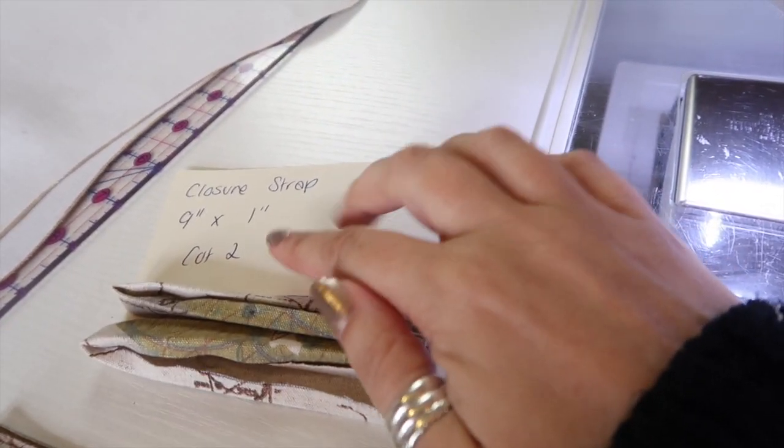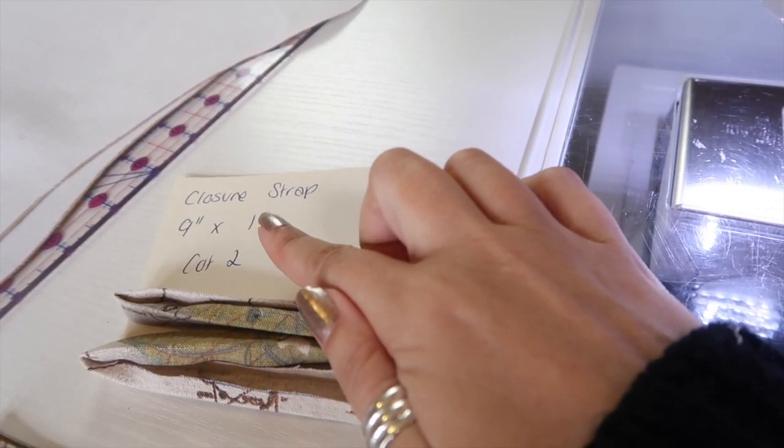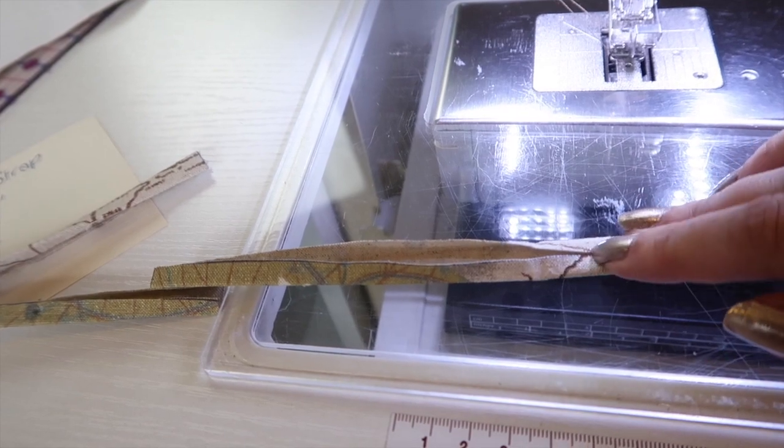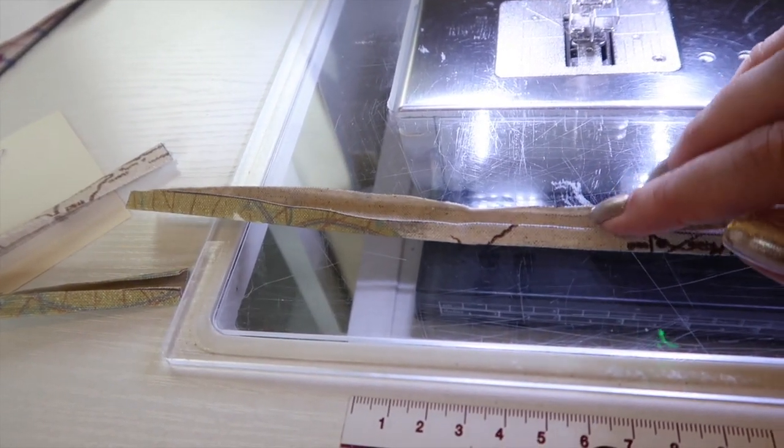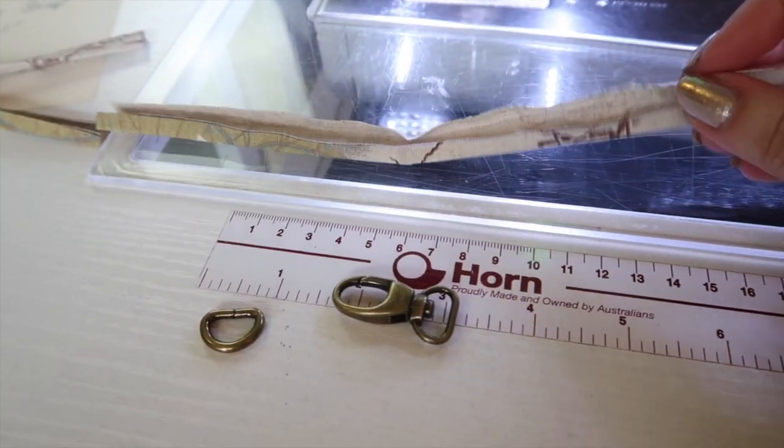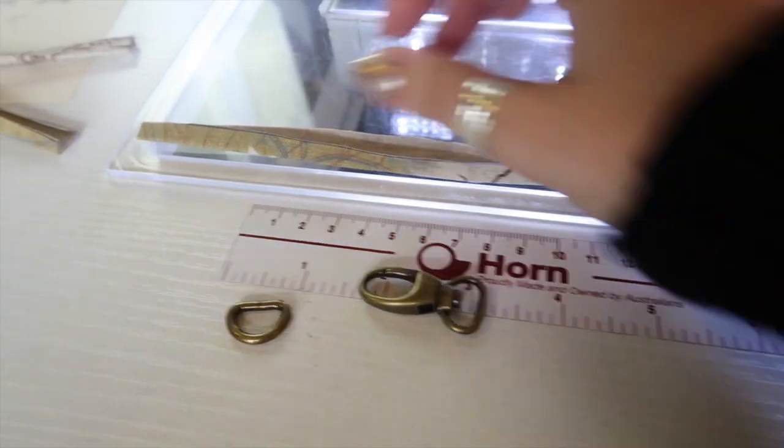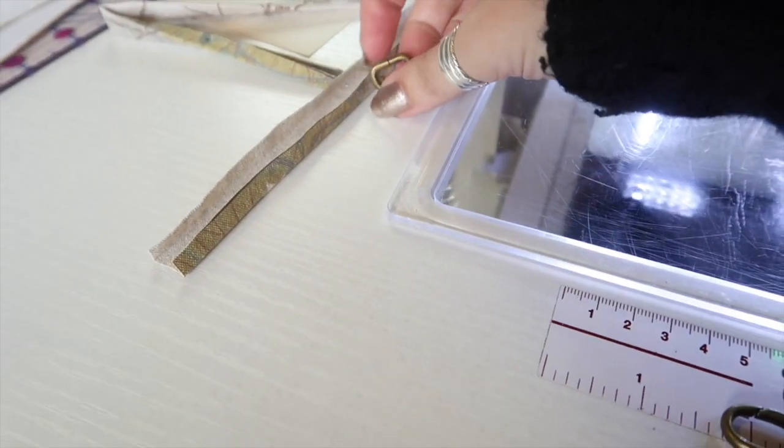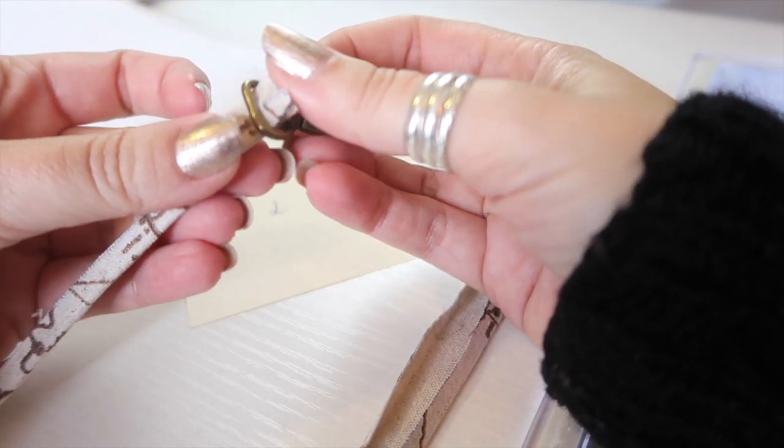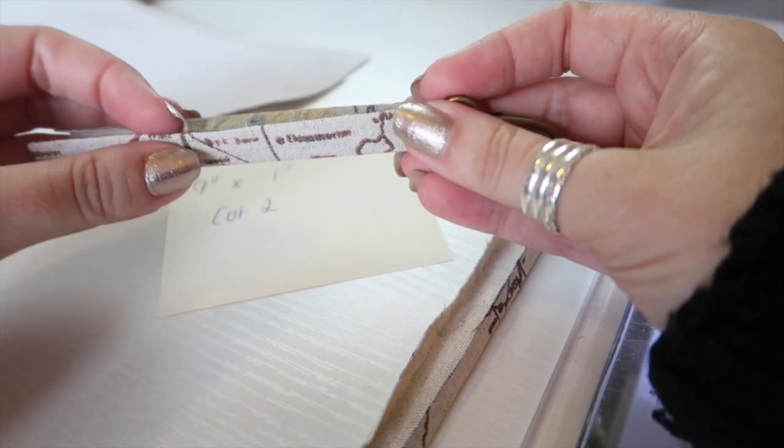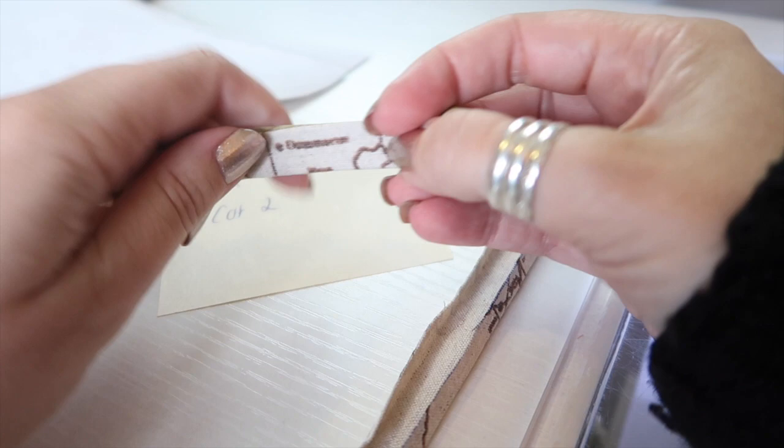Okay, so the straps are done. Now I'm going to move on to the closure strap. So you want your two pieces that are nine inches by one inch, and what you're going to do with those is you're going to fold the raw edges into the center, so you end up with a piece of fabric that is half an inch wide. You're going to need your swivel clasp and your D-ring. And what you're going to do is, once you have folded and pressed the fabric into the center, you're then going to thread on—see if I can do this one-handed, probably not—I'm going to put the camera down. Okay, so you're going to thread on your swivel clasp, and I did press mine so that it also had a crease in the middle, and then you're going to top stitch.